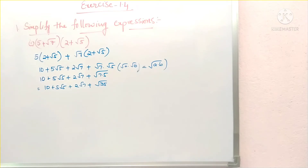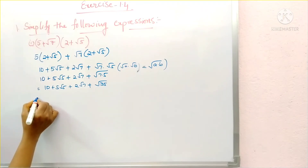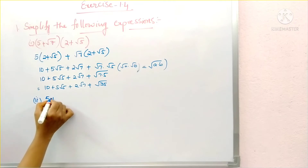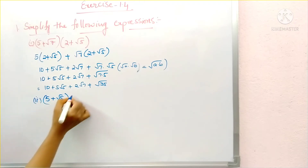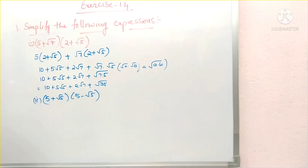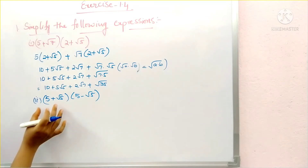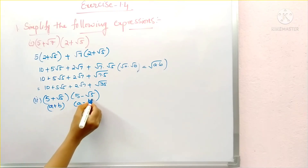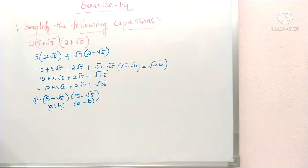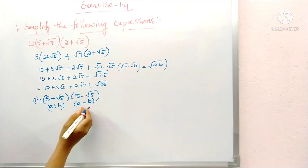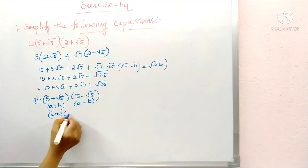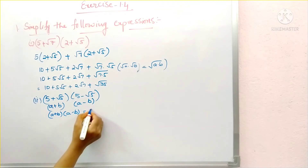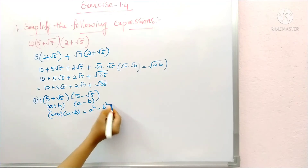Our second problem is 5 plus root 5 into 5 minus root 5. If we observe this problem, it is in the form of a plus b into a minus b. The formula for a plus b into a minus b is equal to a square minus b square.